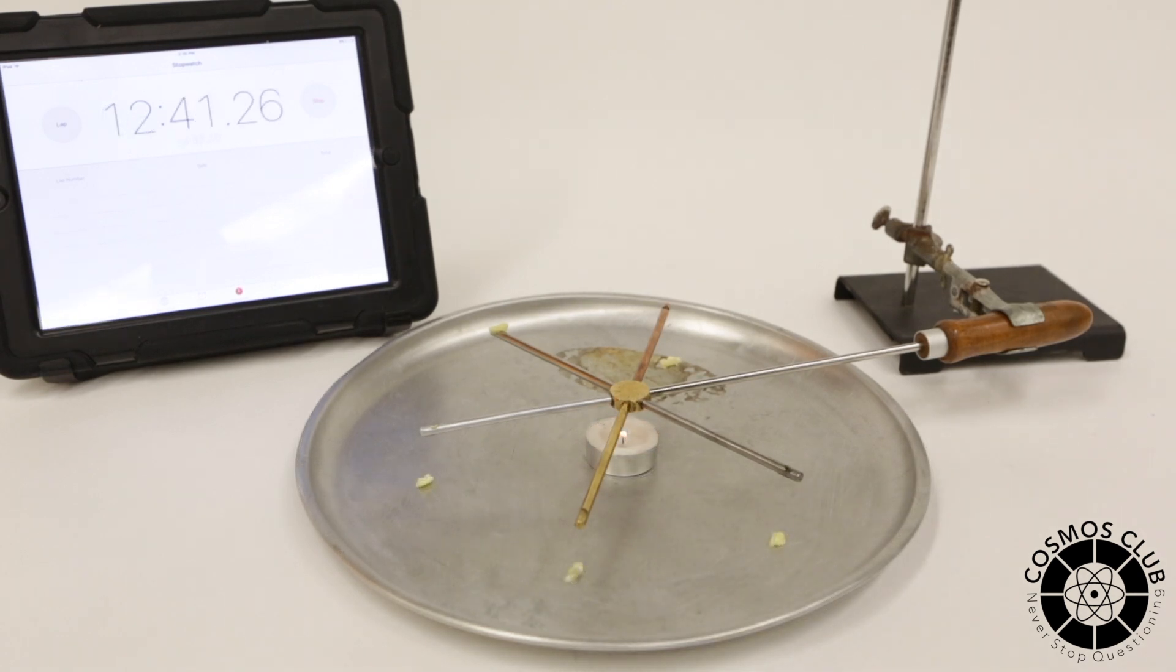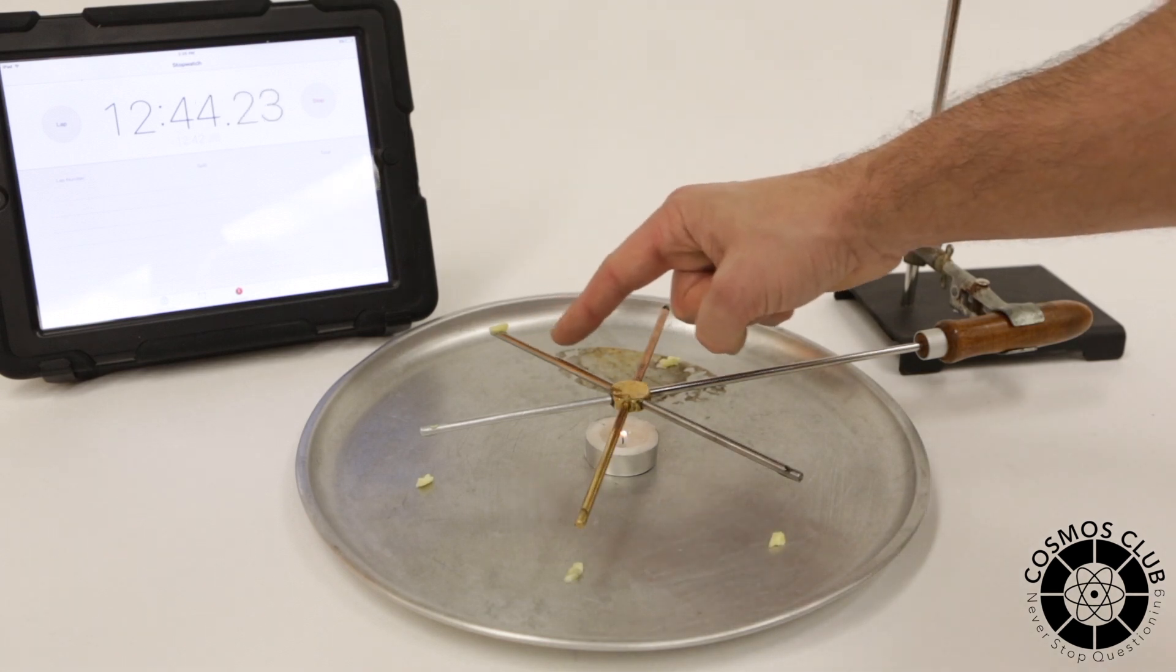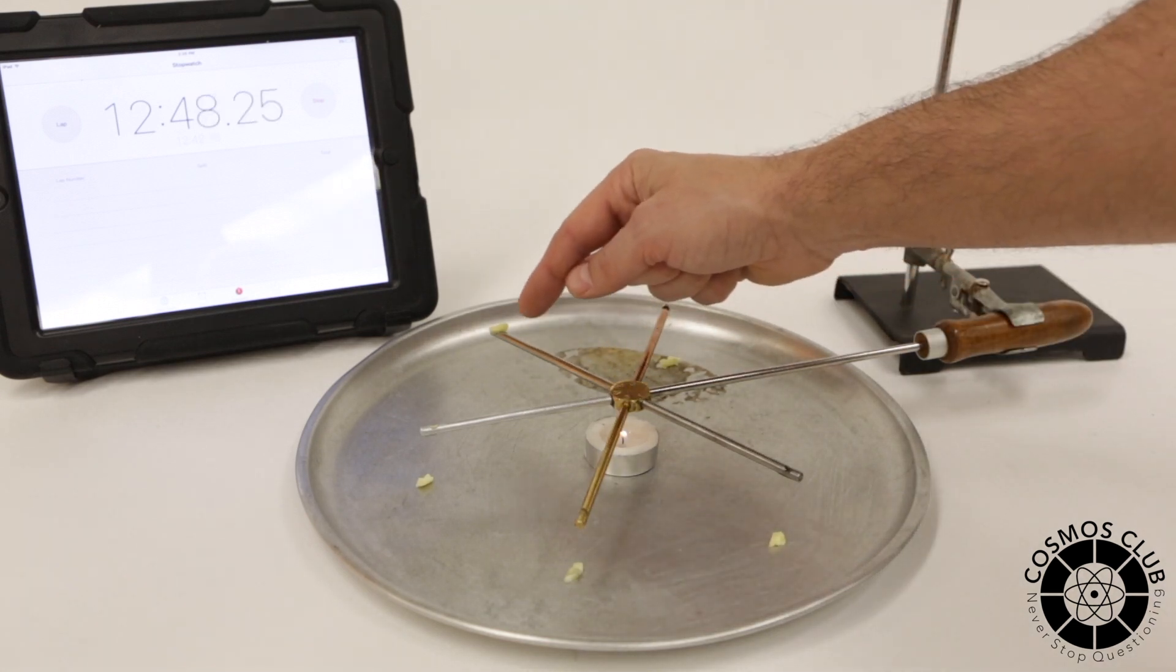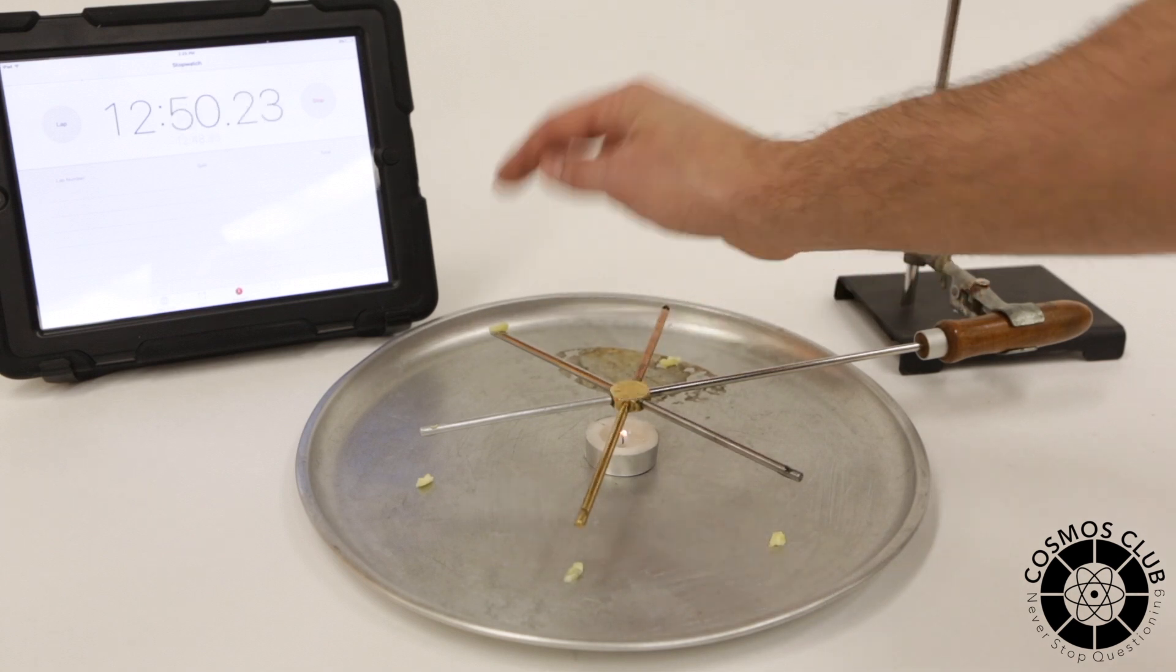So as you can see, we're well past the 12-minute mark here, and stainless steel is still holding on. It has not conducted enough heat energy along that stainless steel rod in order to melt that butter at the end.